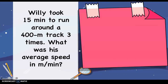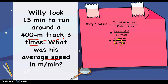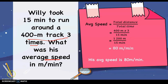Next: Willie took 15 minutes to run around a 400-meter track 3 times. What was his average speed in meters per minute? Using the formula, total distance equals 400 meters times 3, which is 1,200 meters. The total time is 15 minutes. So 1,200 meters divided by 15 minutes equals 80. Therefore, Willie's average speed is 80 meters per minute.